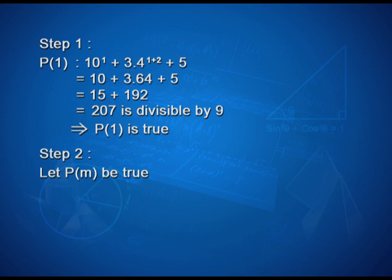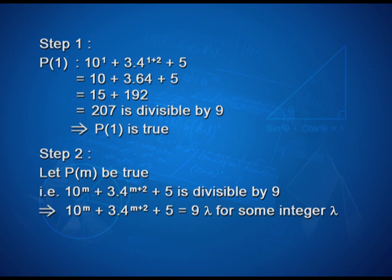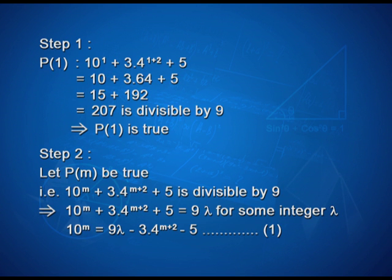In step 2, let P(m) be true. That is, 10 to the power m plus 3 into 4 to the power m plus 2 plus 5 is divisible by 9. This implies 10 to the power m plus 3 into 4 to the power m plus 2 plus 5 can be written as 9λ for some integer λ. This gives us: 10 to the power m equals 9λ minus 3 into 4 to the power m plus 2 minus 5. Take this as the first equation.